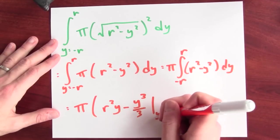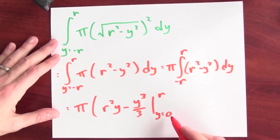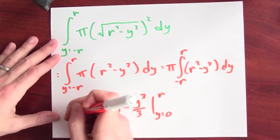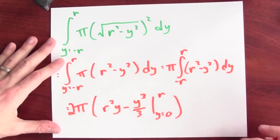If you think about it a bit, I can get away with using 0 to r if I multiply this by 2. And that will simplify the calculation somewhat.